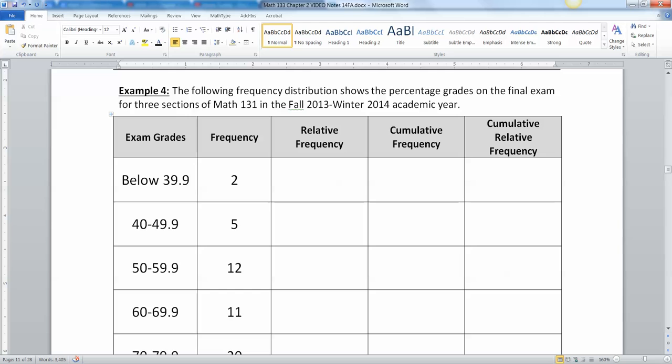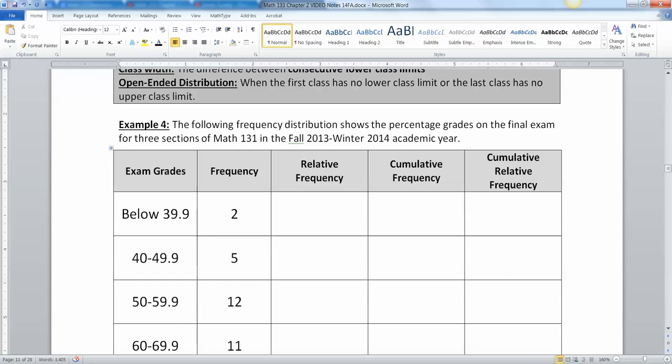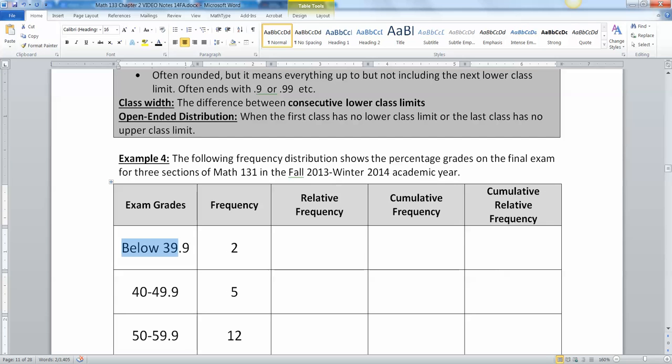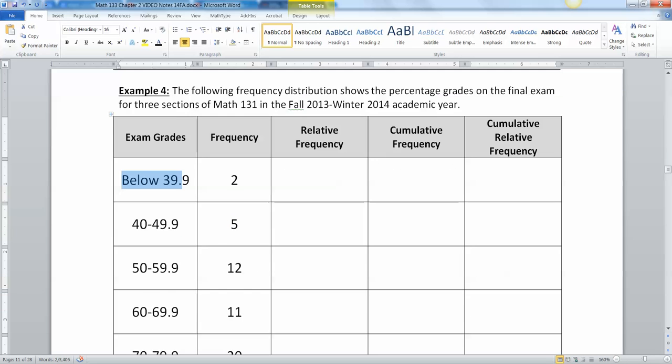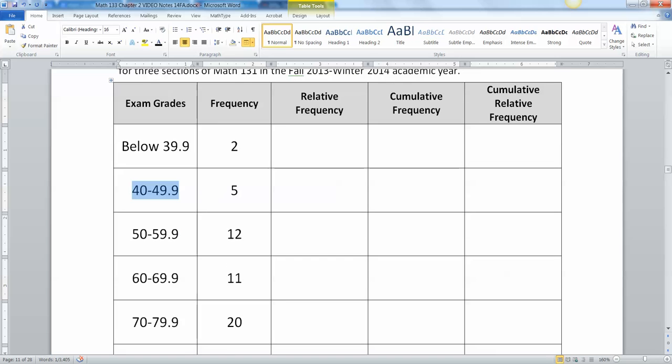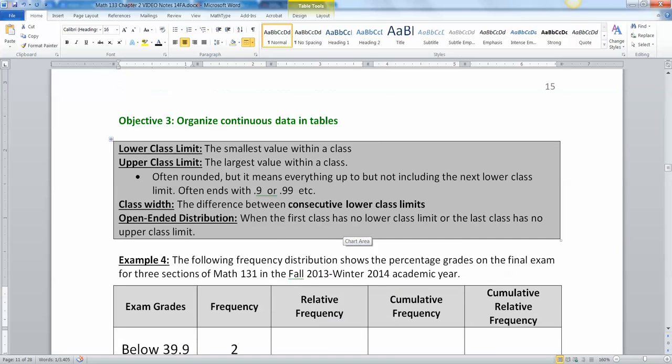All right. So these are the percentage grades on the final exam for three sections of Math 131 in fall 2013 to winter 2014. So you can see that this class is open ended. See how the first class doesn't have a lower class limit, no lower class limits. You don't know where this ends. It could be somebody at 20, could be somebody at 10, could be somebody at 30. You have no idea, but you've got two people there that scored below 39.9. Then you have five people that scored between 40 and 49 and so on. Actually, I'm going to stop this video right here and I'm going to pick up with this table in the next video. I'll see you back here in the next video.